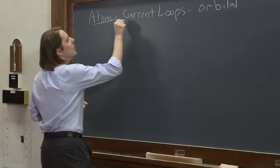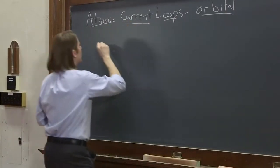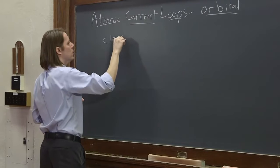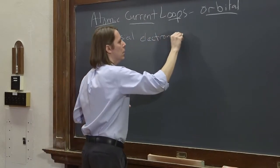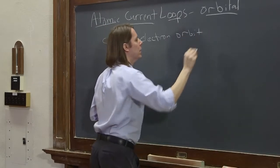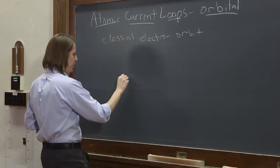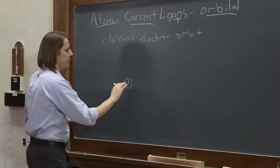So let's think about a classical electron orbit. If we have an atom with a positive nucleus,